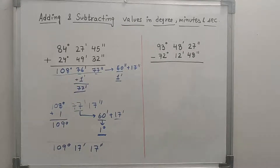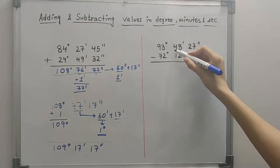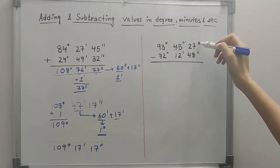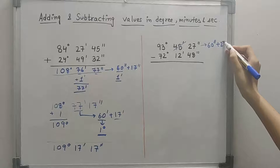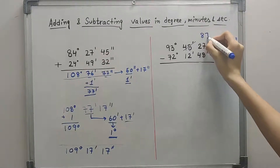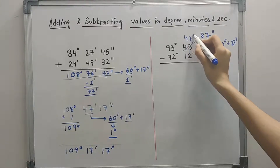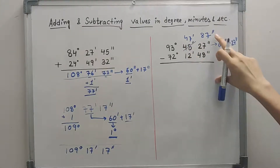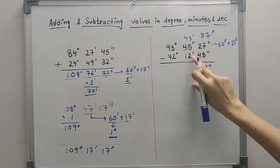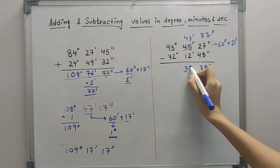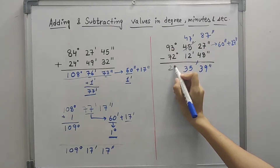Let us now learn how to subtract the values. If we were to subtract directly we would get a negative result, so what we are going to do is carry one minute from 48 minutes to 27 seconds. So 27 seconds would become 60 seconds plus 27 seconds, which is equal to 87 seconds, and the 48 minutes become 47 minutes. Now we can easily subtract: 87 seconds minus 48 seconds gives us 39 seconds, 47 minutes minus 12 minutes gives us 35 minutes, and 93 degrees minus 72 degrees equals 21 degrees.